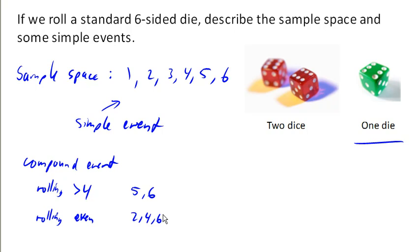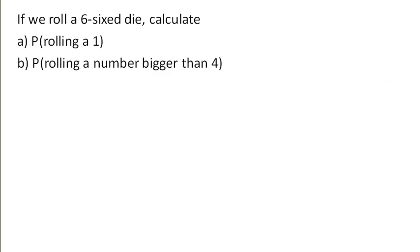So these are our sample spaces—those are all of our simple outcomes. And now we can start talking about probability. So if we're rolling one of those six-sided dies, can we calculate, let's say, the probability of rolling a 1? This notation here, P parentheses, is used to denote probability of. And so this is the probability of rolling a 1. Now a basic probability can be computed as the number of ways that this event can occur divided by the total number of possible events.